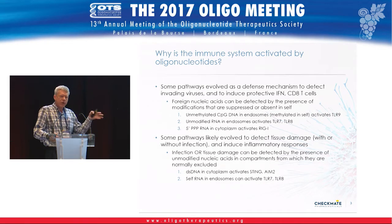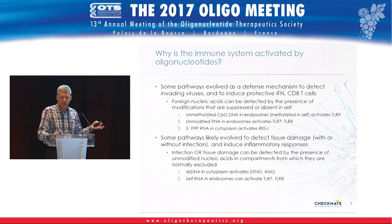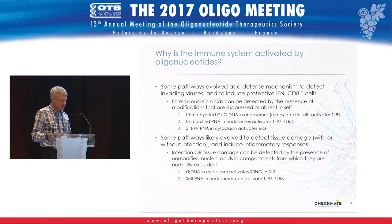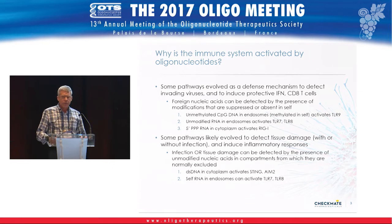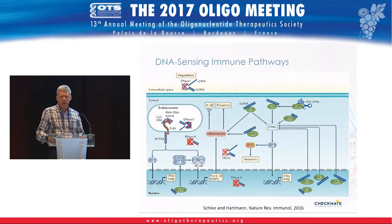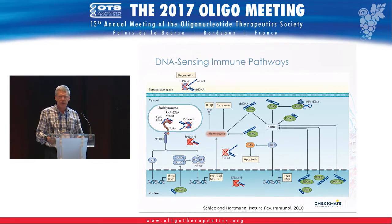If RNA gets chopped up, it loses its N-1 methyl modification, so self-RNA can also activate these pathways in endosomes or potentially in the nucleus as well. We have a whole session at this meeting talking about innate immune recognition and nucleic acid immunity.